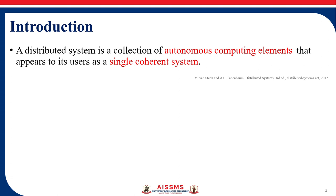A distributed system is a collection of autonomous computing elements that appears to its users as a single coherent system. Autonomous computing elements can be referred to as nodes — they can be hardware devices or software processes. Single coherent system means users or applications perceive a single system, and the nodes need to collaborate.